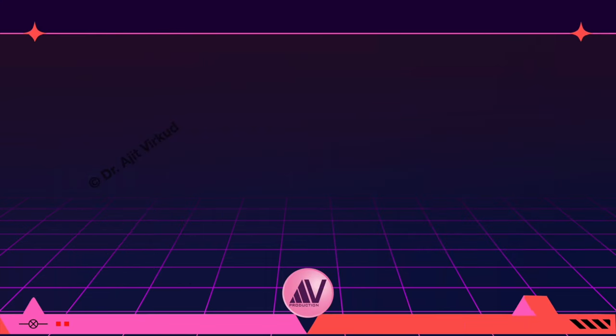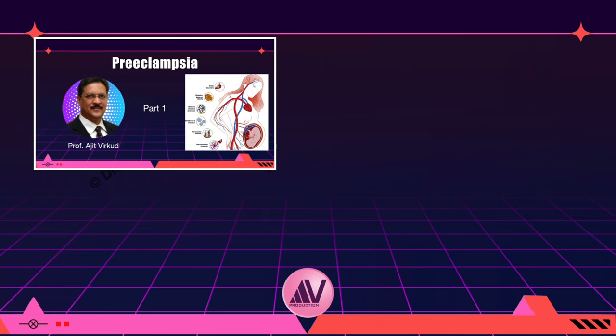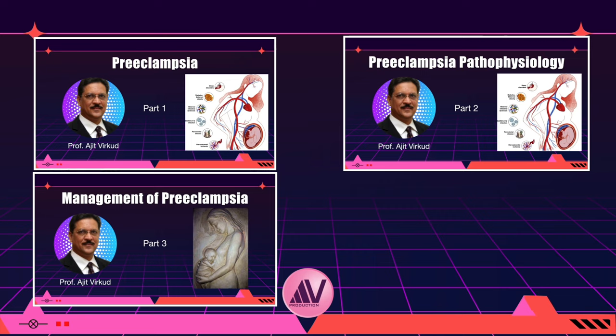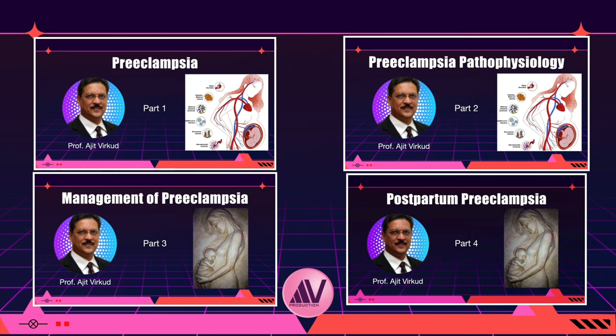In order to understand the management of this dreadful obstetric complication, it is imperative that you watch my other related videos: Preeclampsia Part 1, Preeclampsia Part 2, where I have discussed the pathophysiology of the disease, especially how our understanding of the etiopathology has changed in recent times. Preeclampsia Part 3, where I outline the management of preeclampsia. In Part 4 I have discussed postpartum preeclampsia. Please also watch individual videos on the drugs essential for management: magnesium sulfate, alpha methyldopa, and labetalol.